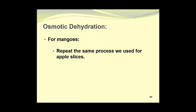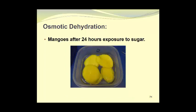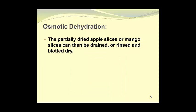For mangoes, we can repeat the same process that we used for apple slices. Here we see mango slices in the container covered with table sugar or sucrose crystals. After 24 hours' exposure to the sugar, we now see that there is a sugar solution on the bottom of the container that was created when the water was removed from the tissues of the mango. The partially dried apple slices or mango slices can then be drained or rinsed and blotted dry.